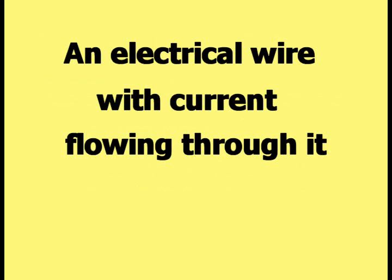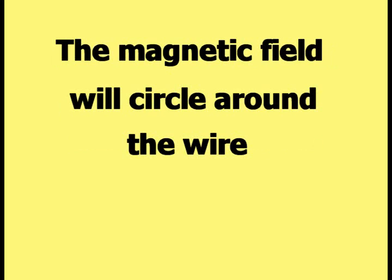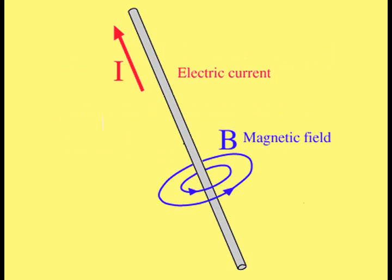An electrical wire with current flowing through it has a magnetic field associated with it. The magnetic field will circle around the wire as demonstrated in this picture.